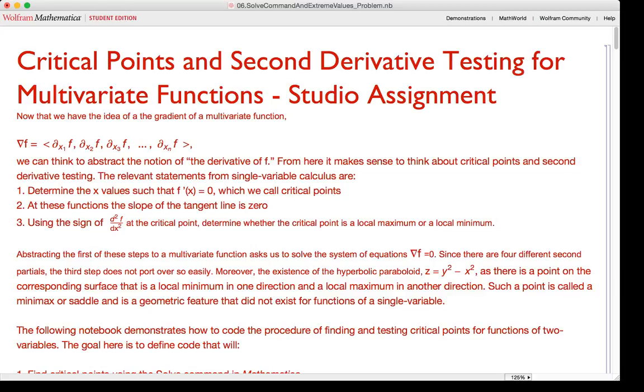Also in single variable calculus, you all use the second derivative in order to determine what type of critical point you got from setting f prime equal to zero. And that is done again here, except it's a bit more complex. Use the Hessian matrix to determine what type of critical point you have for multivariate function.